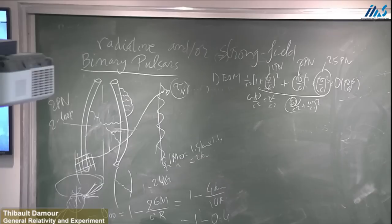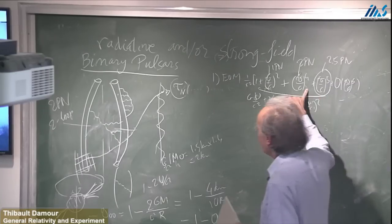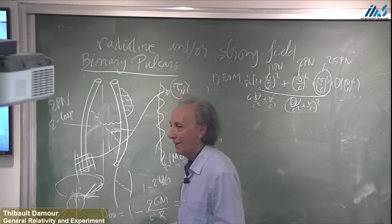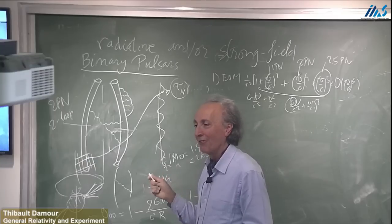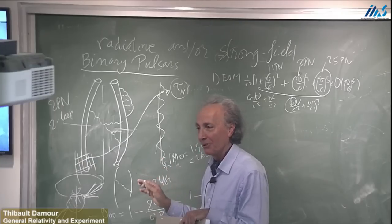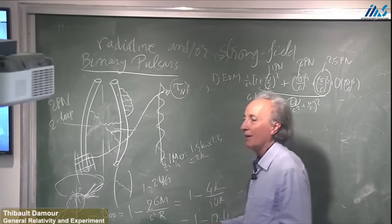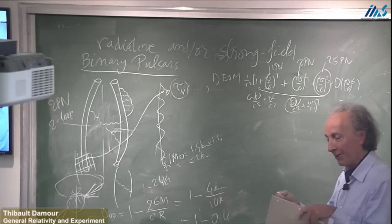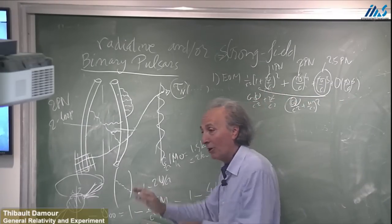This can be done by using matched asymptotic expansion techniques, and that was done at the time. And when you do the computation, does it change the end result? We are going to see that in tensor-scalar theories it changes it by 100%, but not in GR. When you are in GR, you prove — and it is a non-trivial thing — that this can be renormalized away completely.